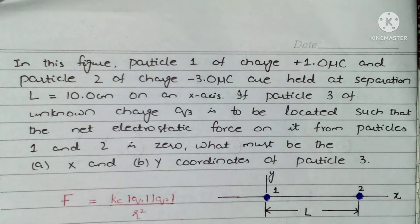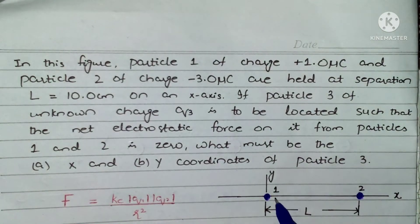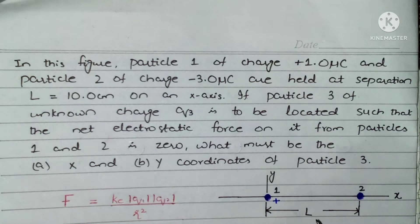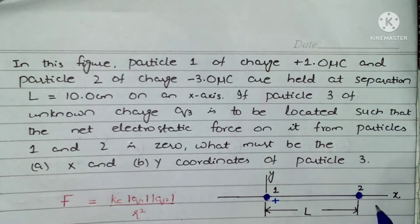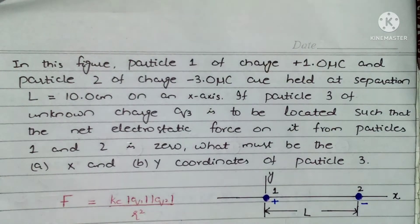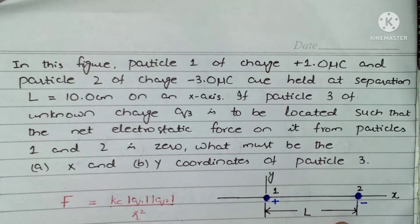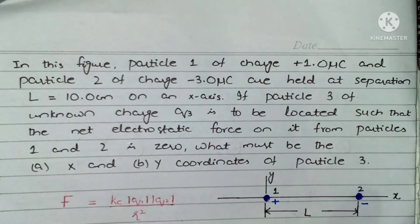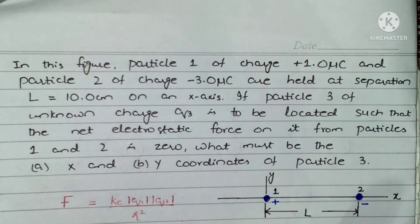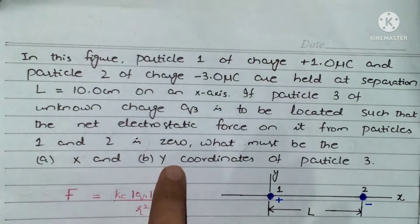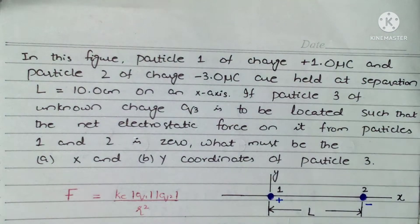Hello dear students. The question for today's video is: in this figure, particle 1 has charge positive 1 microcoulomb and particle 2 has charge negative 3 microcoulomb. They are held at separation L equals 10 centimeters on the x-axis. If particle 3 of unknown charge q3 is to be located such that the net electrostatic force on it from particles 1 and 2 is zero, what must be the x and y coordinates of particle 3?